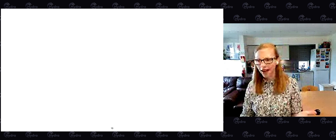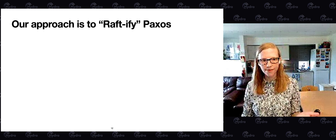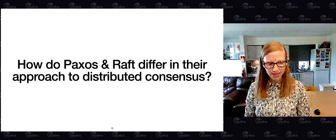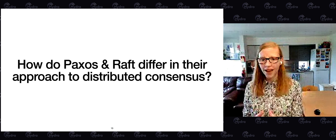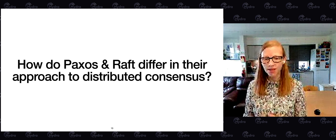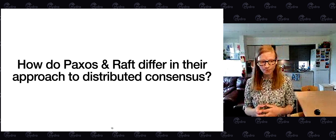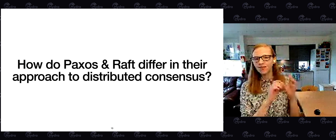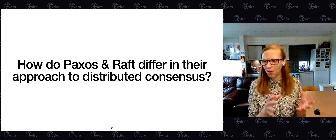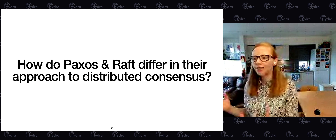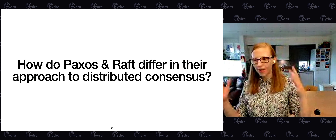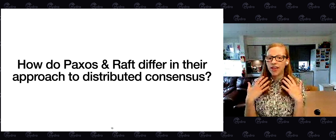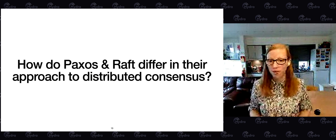Our big question is: how do Raft and Paxos differ in their approach to solving distributed consensus? This is really important — not just for choosing between algorithms, but because if we can bridge these two communities, we have access to thousands of papers on optimizing Paxos that we could potentially apply to Raft. Instead of having two communities doing their own work separately, we can unify them and share all these optimizations.